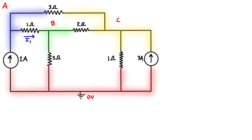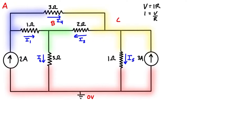To get started with KCL we need to assume some current directions. It doesn't matter which way we draw them — one of these may be in the wrong direction, but that won't hurt the analysis; we'll find out later and just flip it. For reference, Ohm's law is V = IR, or rearranged: I = V/R. For our sign convention: currents flowing into a node are negative, currents flowing out are positive, and the sum of all currents equals zero.